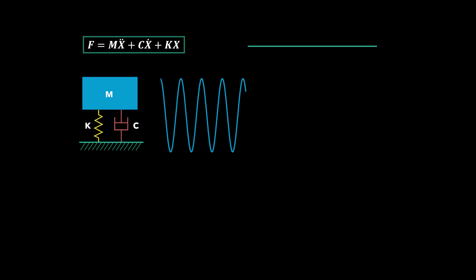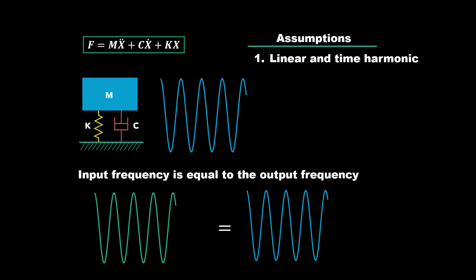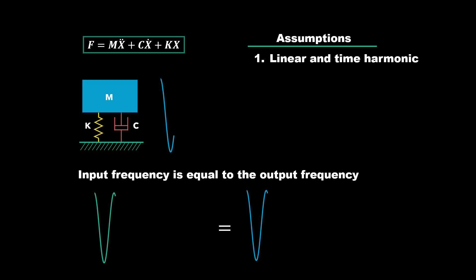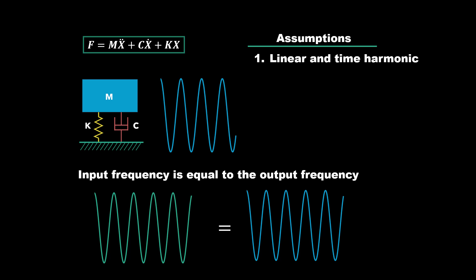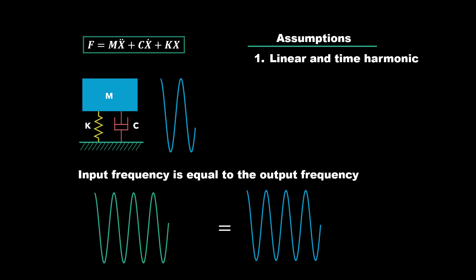Now we're going to make some assumptions. The first is that our solution is going to be linear and time harmonic. Time harmonic just means that the input forcing frequency is equal to the output displacement frequency. I've colored the forcing sine wave green so you can see that the force is acting on the system in an oscillating manner. And we want to make sure that what we're putting in is what we're getting out. For example, if the frequency of this wave was 10 hertz on the input, this system will respond with 10 hertz on the output.